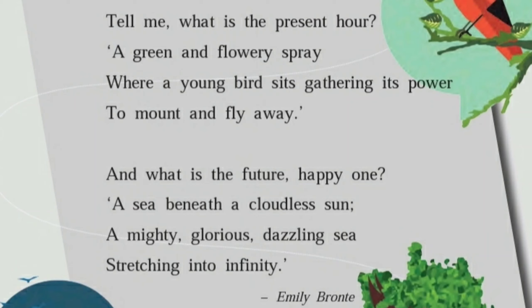Let's move to the second stanza. The poet wants to know about the present time of the child: 'Tell me, what is the present hour?' The child replies: 'A green and flowery spring.' This indicates the spring season, where greenery is everywhere, flowers bloom, and all trees get new leaves — it's a beautiful season.